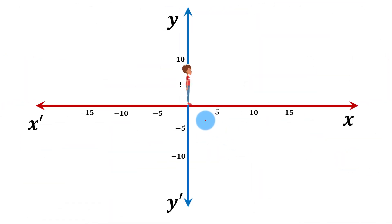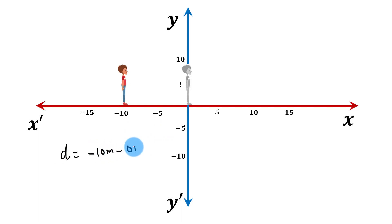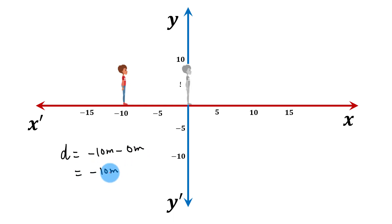When the boy moves in the negative direction of the x-axis by 10 meters, his final position is negative 10 meters. In this case, displacement equals negative 10 meters minus 0 meters, which equals negative 10 meters. So in this case, displacement is negative.